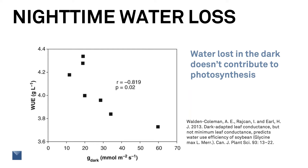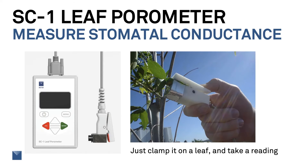Even though these conductances are an order of magnitude smaller than we'd expect during the day, this nighttime loss appears to influence the transpiration efficiency. The quote from Briggs and Schantz suggested the possibility of developing through selection strains that are still more efficient in the use of water — this hasn't been the case with a lot of research, but Walden Coleman and his colleagues appear to have found one method of finding such strains, and we might still make progress on that. Meter has an instrument for measuring stomatal conductance of leaves — it's the SC1 stomatal conductance meter. You clamp it on a leaf and make a measurement. It's pretty easy.